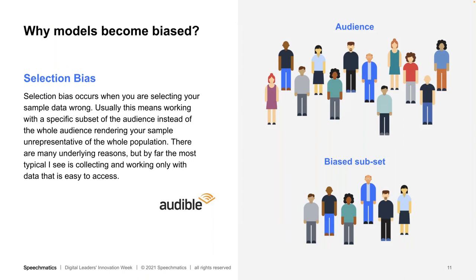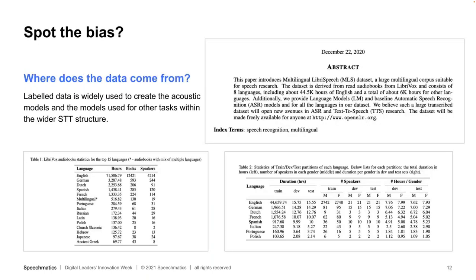Going back to why models become biased — the core of this is selection bias. One simple way to think about how you build speech recognition is audio books. Libraries like Audible have somebody reading a book with the words also available, so you can take the audio and map it to the transcript. The challenge is that only a very small number of people read audio books, and their voices are often very easy to understand and very clear. We've got selection bias: a small number of people are reading these audio books, and we're building technologies around the way those people talk rather than the way society as a whole talks. That's where this bias comes in.